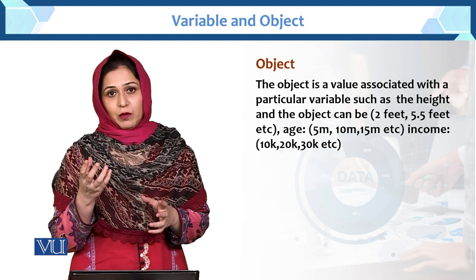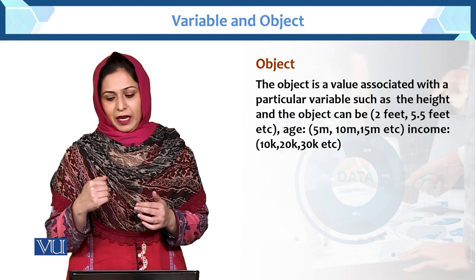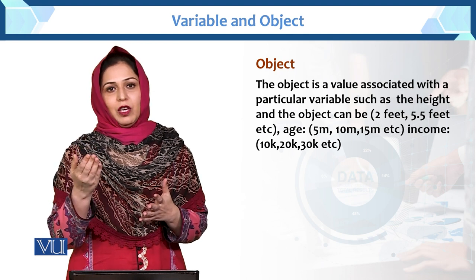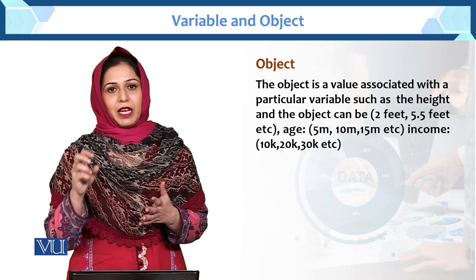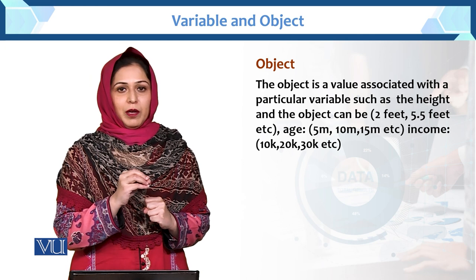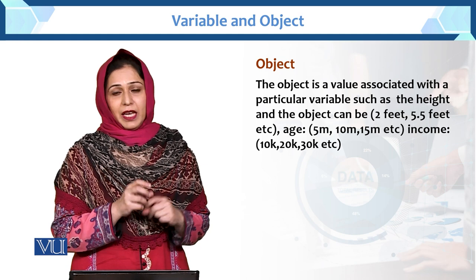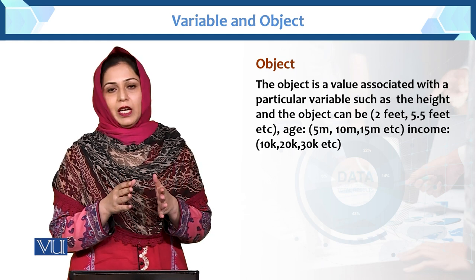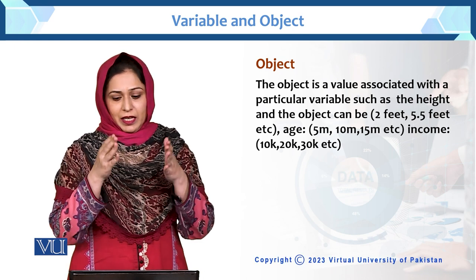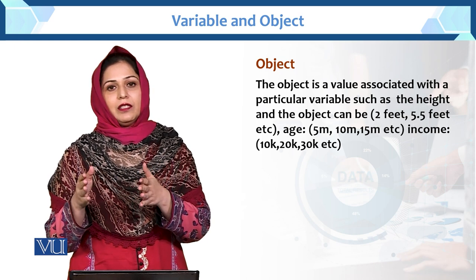Age — age humara kya hai? Variable. Aur age mein further object kya aa raha hai — 5 month, 10 month, 15 month. Humne variable ki different categories banayi hain, that is called the object. Income is the variable, aur income ki further kya kind hai — jismein humne usko further divide kiya: 10,000, 20,000, 30,000, etc. To income is the variable aur categories jo hum usko divide karte hain — 10,000, 20,000, 30,000 mein — that is called the object.